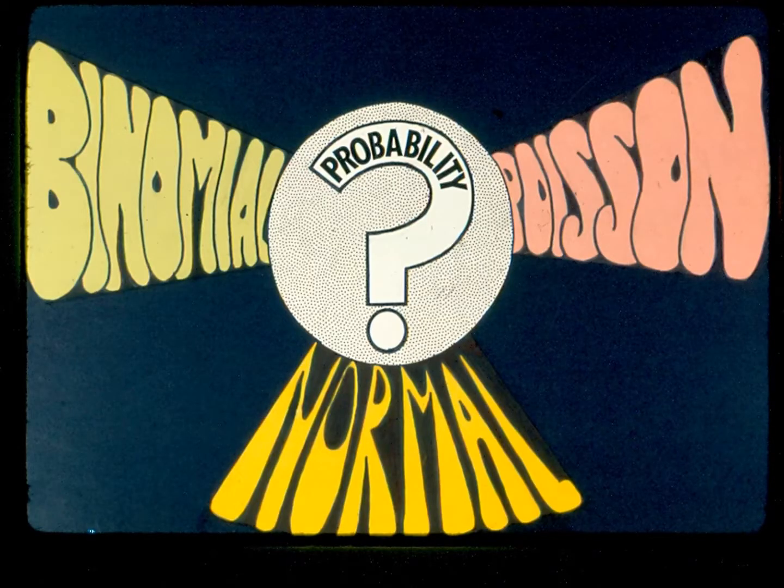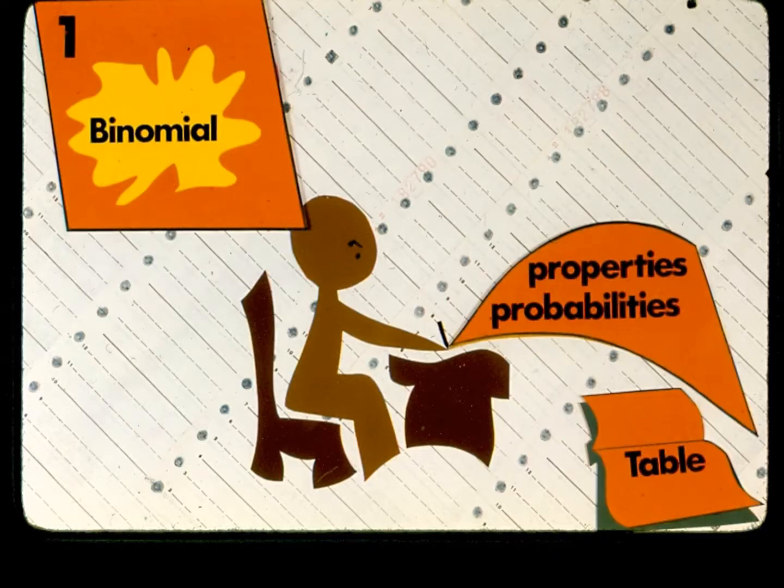This is the first of a series of programs that focuses on probability questions about distributions whose specific characteristics are entirely known and whose general form is either binomial, Poisson, or normal. In this program we describe the essential properties of the binomial distribution. In particular, we will consider how to determine probabilities of interest for the binomial distribution by picking out essential characteristics and consulting an appropriate table of probabilities.